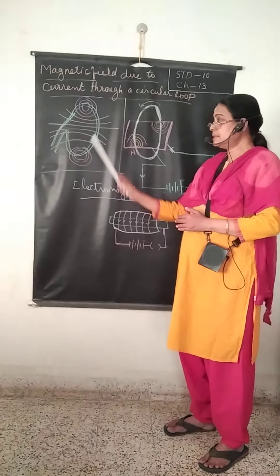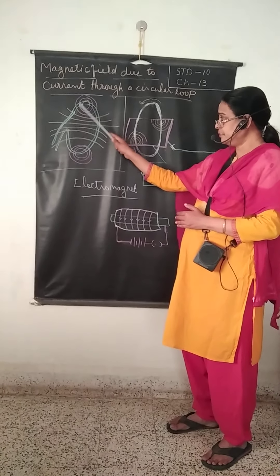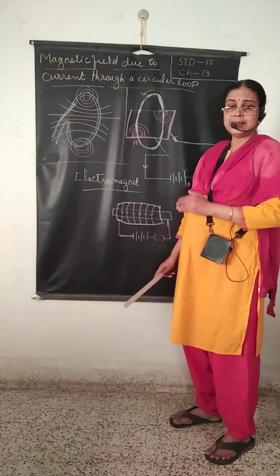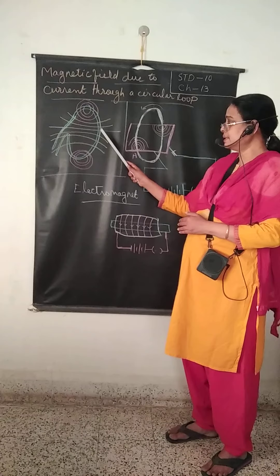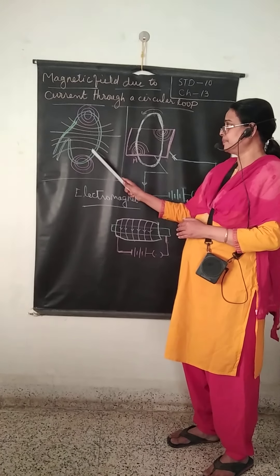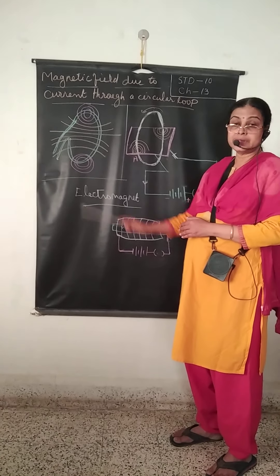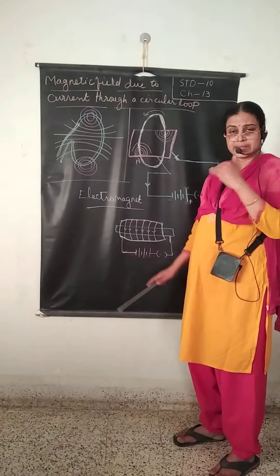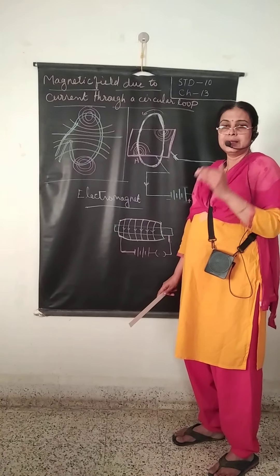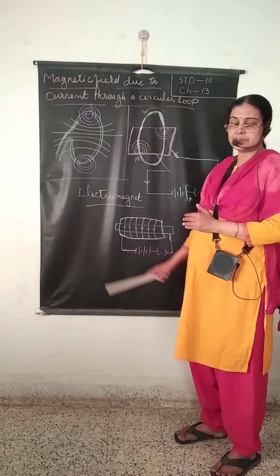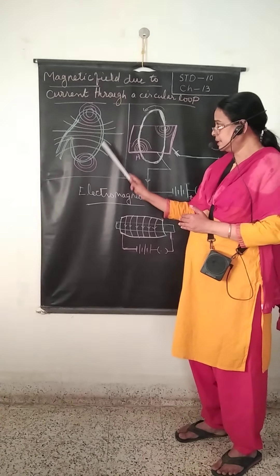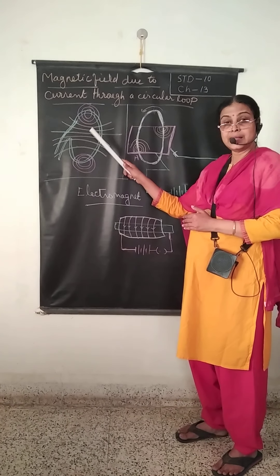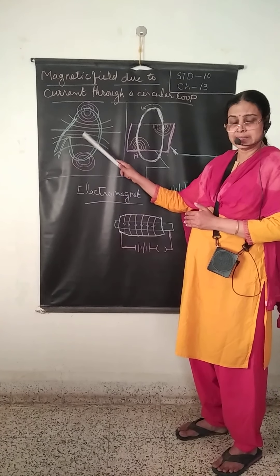The magnetic field produced in the conducting wire depends upon the current passing through it. Now if the number of turns of the coil is increased, then the magnetic field will be n times larger than that of a single turn.